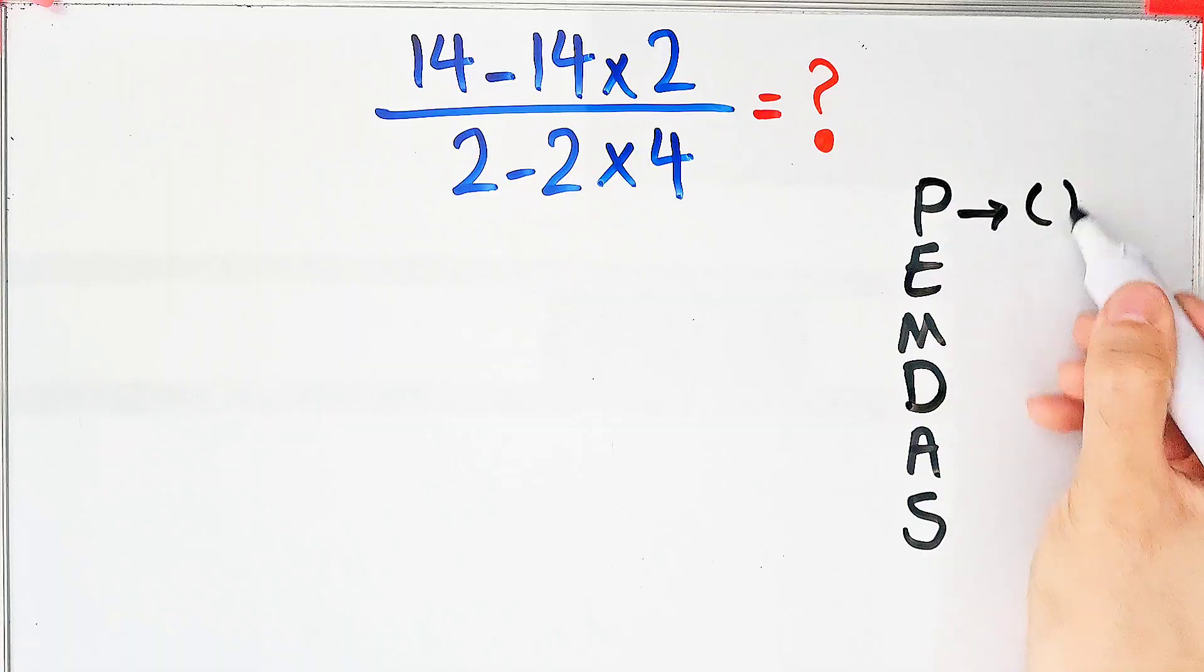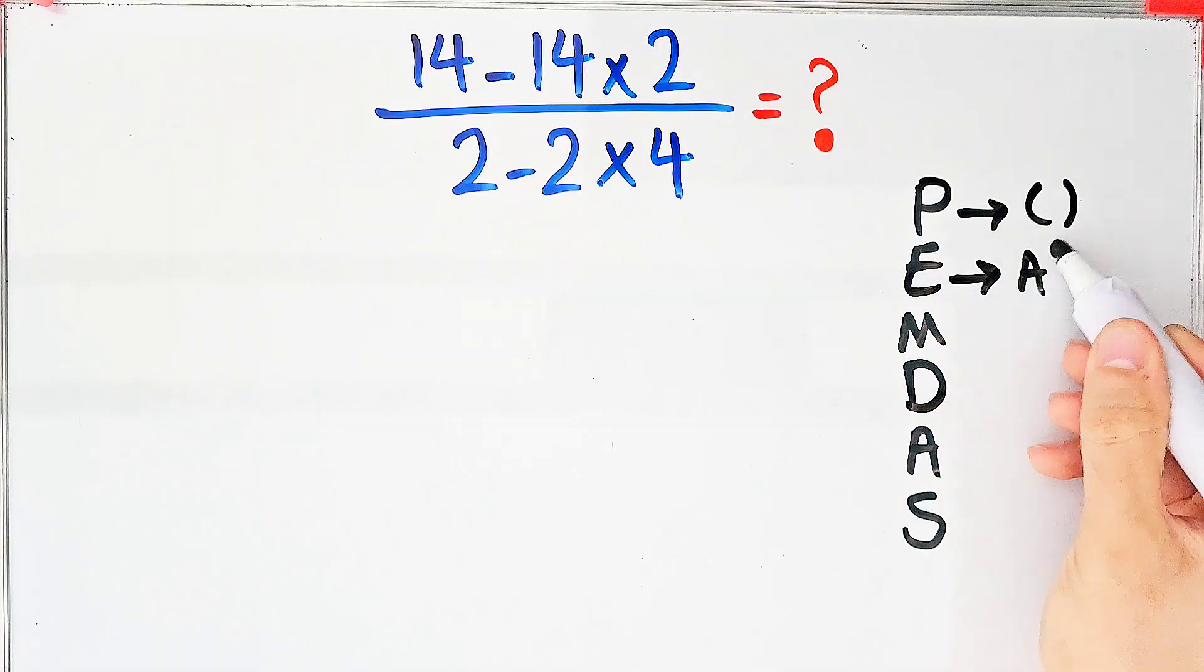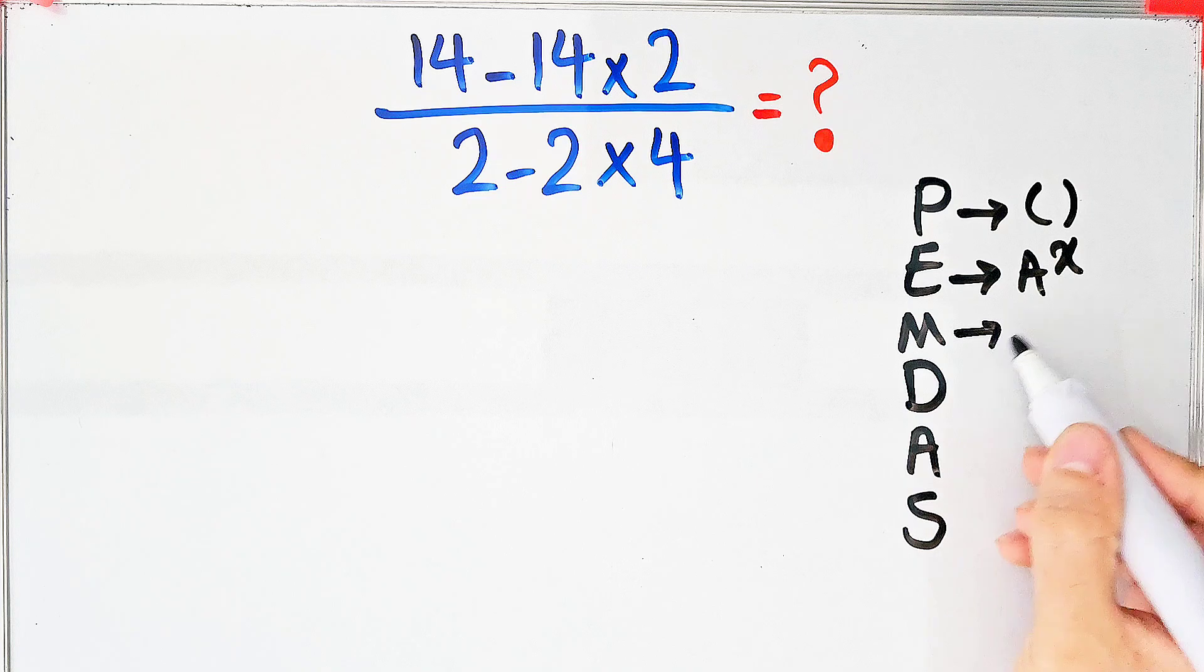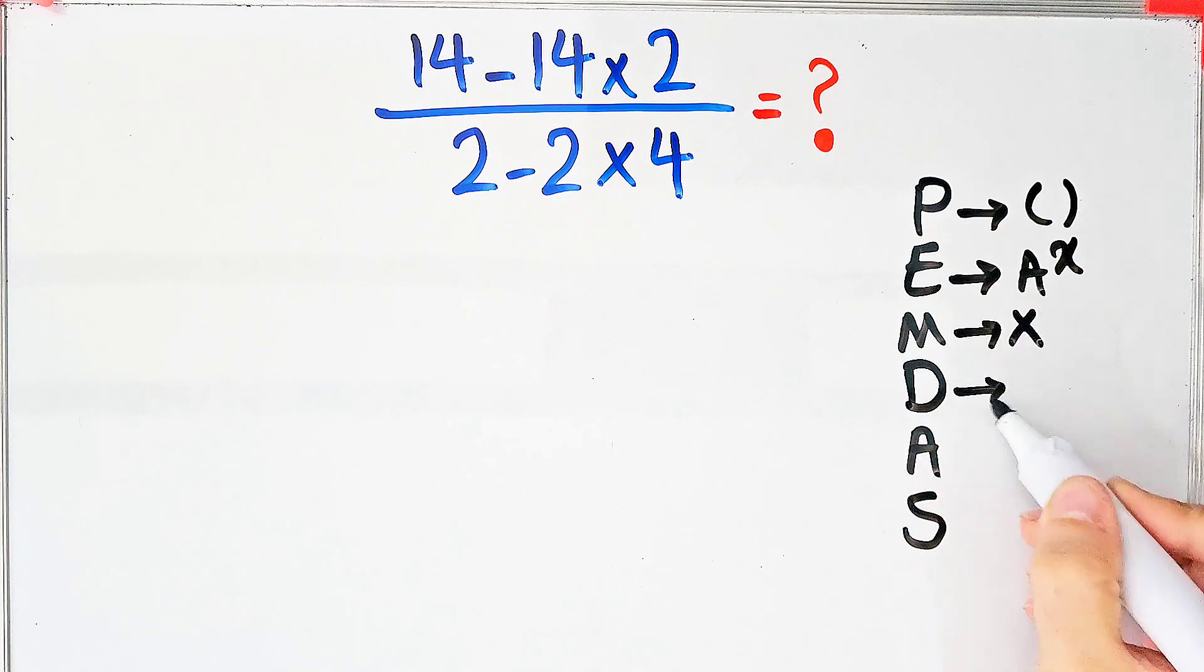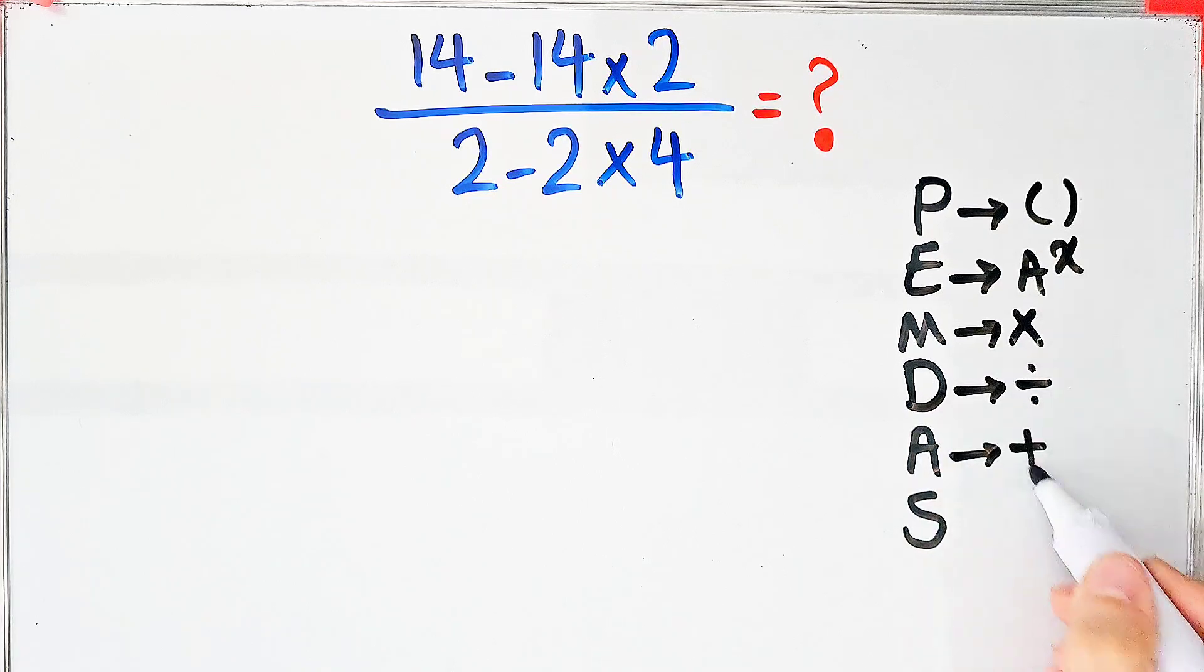In this rule, P stands for parentheses, E stands for exponent, M stands for multiplication, D stands for division, A stands for addition, and S stands for subtraction.